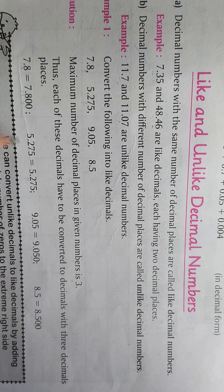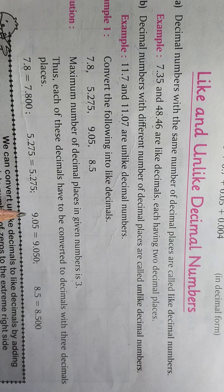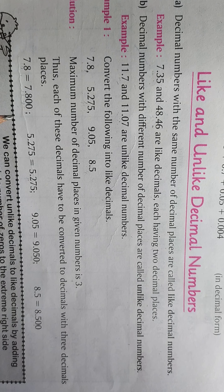So students, in this way we can convert unlike decimals into like decimals by putting zeros at the right side. Because of this, the value of the number will not be increased or decreased — it will remain the same.